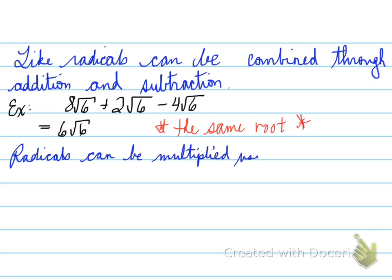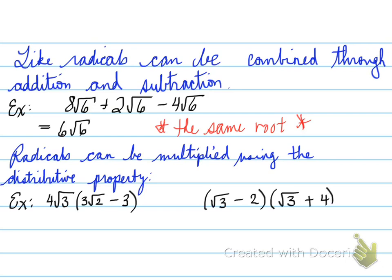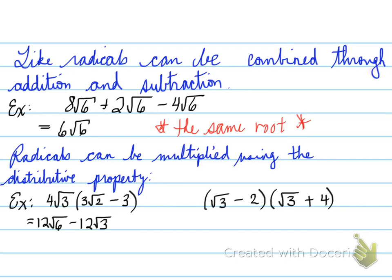Radicals can also be multiplied using the distributive property. For example, 4 root 3 times the quantity (3 root 2 minus 3): multiply 4 root 3 to each term. 4 root 3 times 3 root 2 gives 12 root 6. Then 4 root 3 times negative 3 gives minus 12 root 3, because the whole numbers multiply and the root 3 stays under the radical.